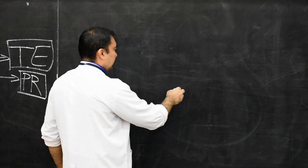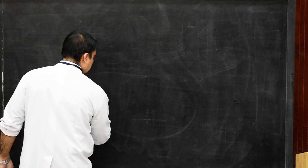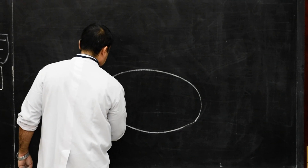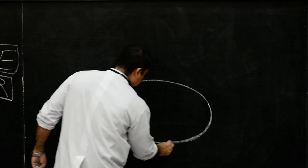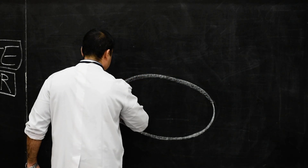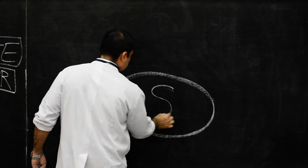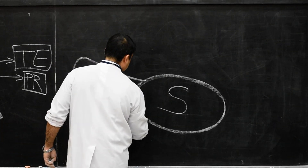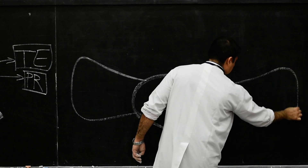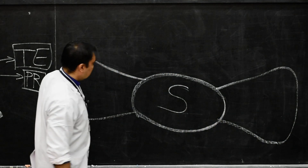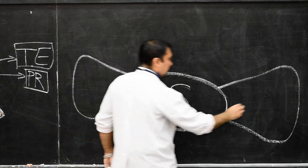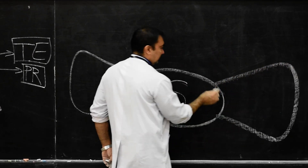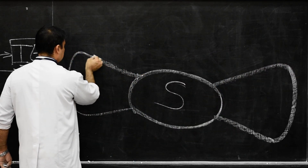We start with the sacrum. We draw a diagram of the sacrum — the sacral body and the lateral mass. This is the lateral mass of the sacrum, which is also called the Ella of the sacrum.